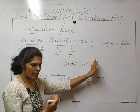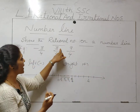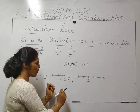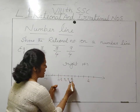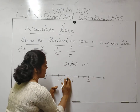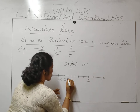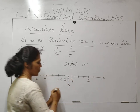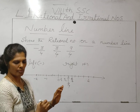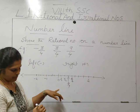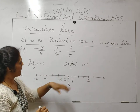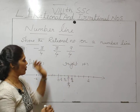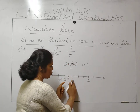Now the first question — the positive value 3 upon 4. Where does 3 upon 4 come? 3 upon 4 is here. So we mark it with an arrow and label it 3 upon 4.